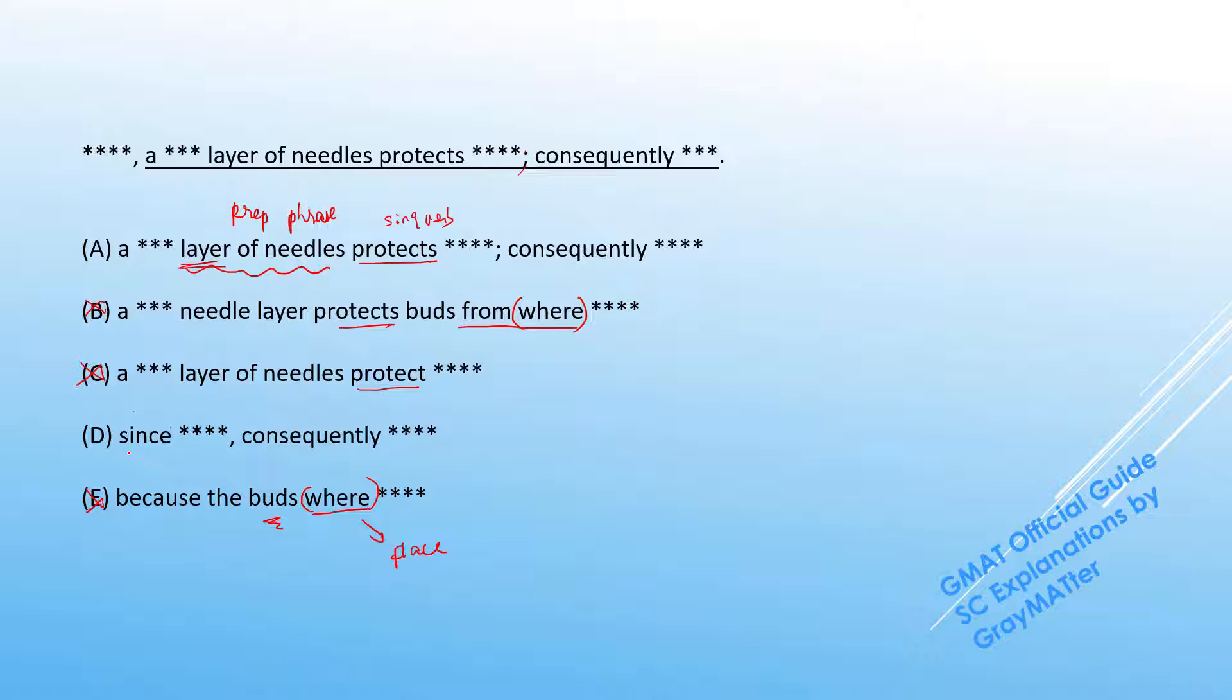Now what we can notice in D is that the conjunction since is used here and the adverb consequently is used. This is a meaning problem because the conjunction since is used to give a logical explanation of something, and the adverb consequently means it's a result of something. If you're already saying that this is the reason why something is happening, you don't have to indicate that consequently this is the result.